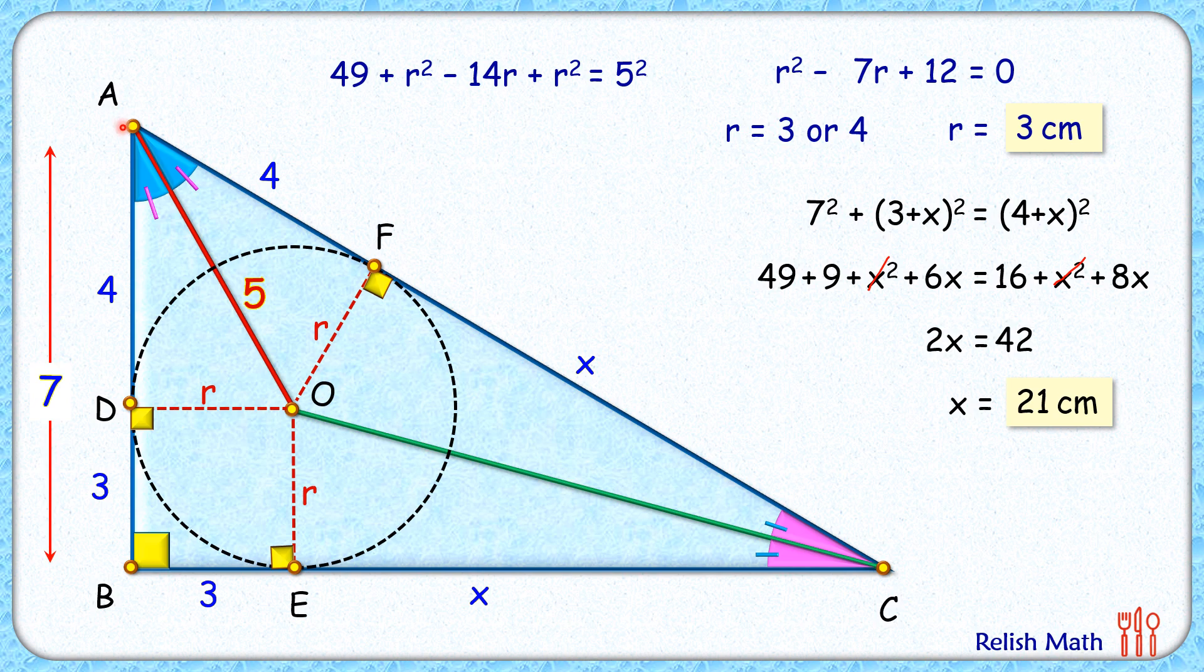Area of the triangle is asked, which is half of base into height. So base here is 24 and height is 7, so area will be half of 24 times 7. Simplifying it, area is 84 square centimeters, and that's our answer. I hope you enjoyed the solution. I will see you in the next video. Till then, tata, bye bye!